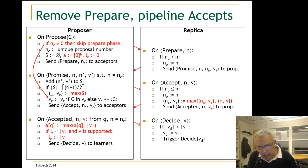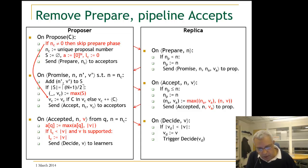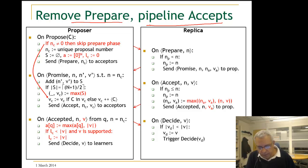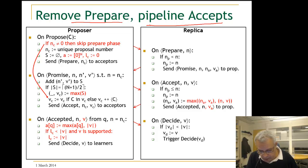Here is our algorithm until now. We have seen from the last unit that the last optimization was 'prepare once' and 'pipeline accept.' Now we would like to actually avoid sending sequences in different messages. So let us look at how we do that.